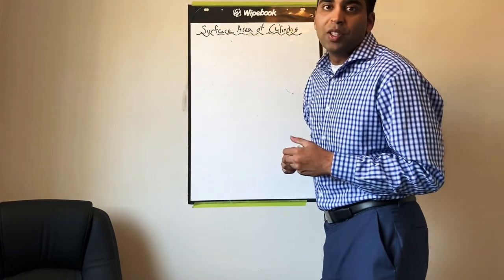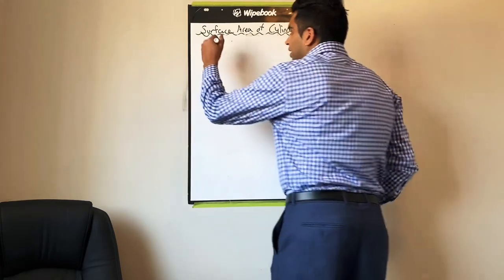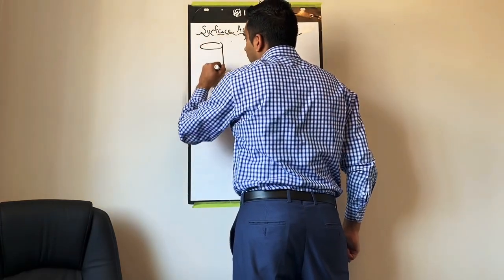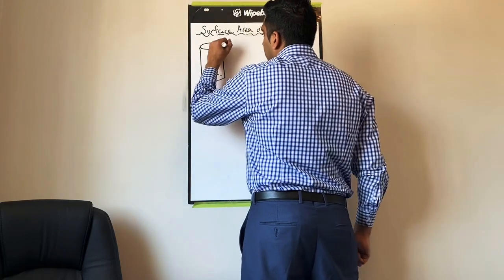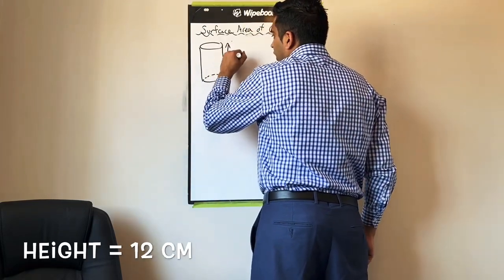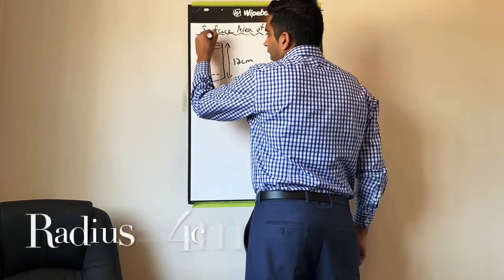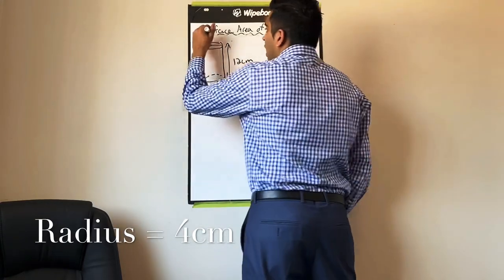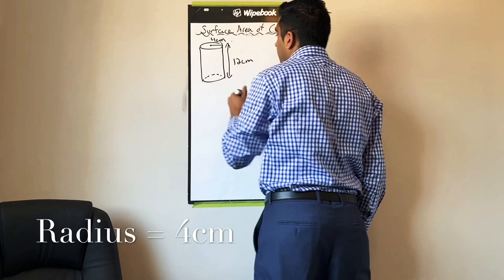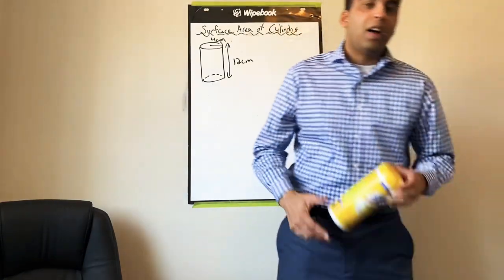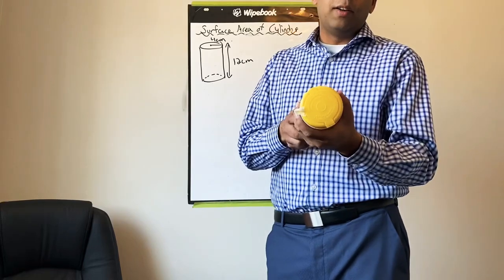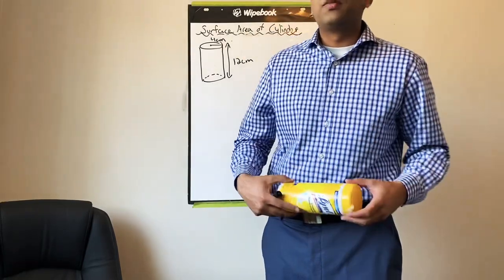So cylinders are a little bit different than what we've been used to working with before the break. Surface area of triangular prisms, rectangular prisms—cylinders are a bit of a different beast to tackle. So this cylinder here has a height of 12 centimeters and a radius, I know you remember what a radius is, of 4 centimeters. What do you notice about the shape of the top of this cylinder? It's a circle.